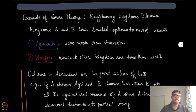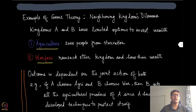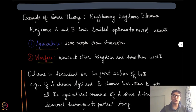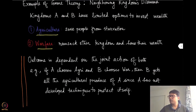They can either invest on agriculture — and therefore save people from starvation — or they can invest in warfare. For this example, let's assume they cannot invest on both; they either spend entirely on agriculture or entirely on warfare. If they invest on warfare, they are capable of defending themselves by raising a powerful army and can also attack the other kingdom to ransack their produce, land, and wealth.